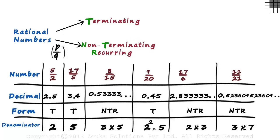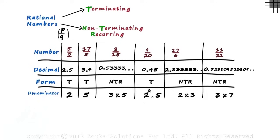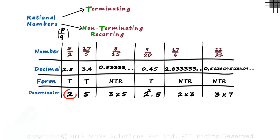Let's observe the denominators of the terminating decimals. The prime factors of the denominator are either 2 or 5 or both, 2 and 5. Now let's look at the prime factors of the denominators of non-terminating recurring decimals. They have numbers other than 2 and 5. Yes! That's the trick!